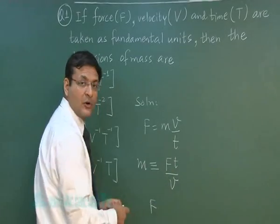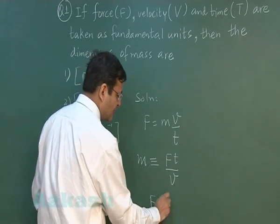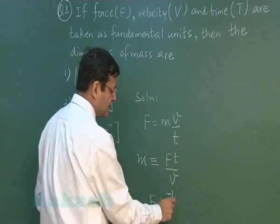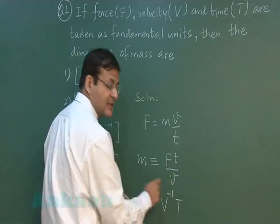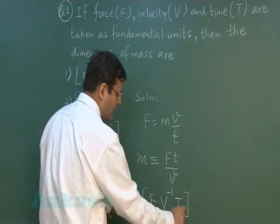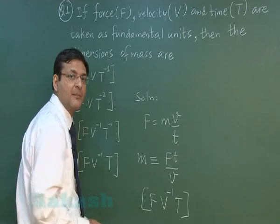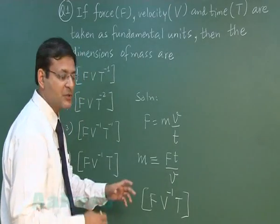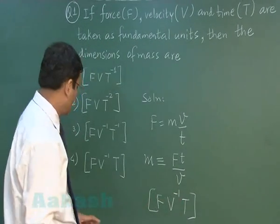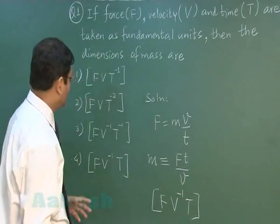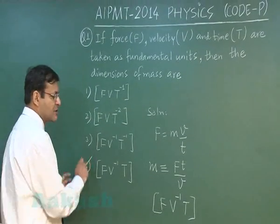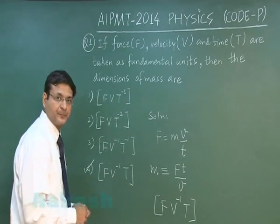Velocity will go in the numerator, so this will be V⁻¹, and T is already in the numerator. So the total dimensional formula for mass in these fundamental units comes out to be F V⁻¹ T. Searching the options, the fourth option is the correct answer for question 1.